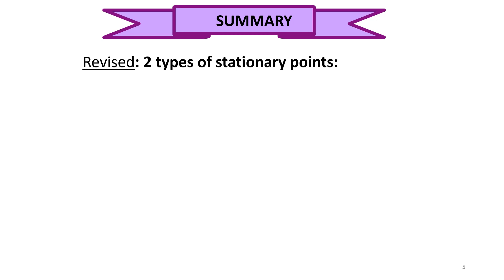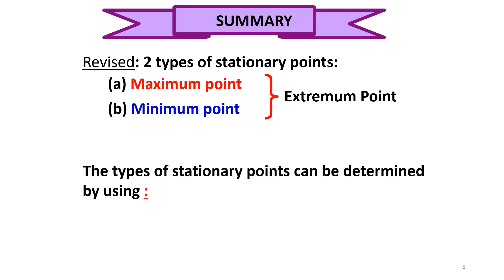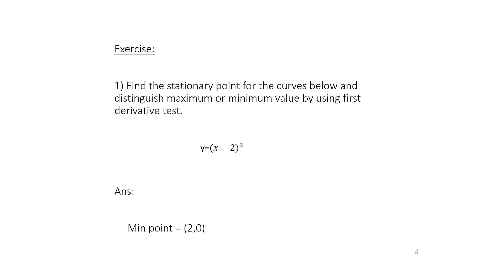We have learned that there are two types of stationary points. Both the maximum point and the minimum point are called extremum points. The type of stationary point can be determined by the first derivative test. For the exercise, find the stationary point for the curve below and distinguish maximum or minimum value by using the first derivative test. Submit your solution to your lecturer.